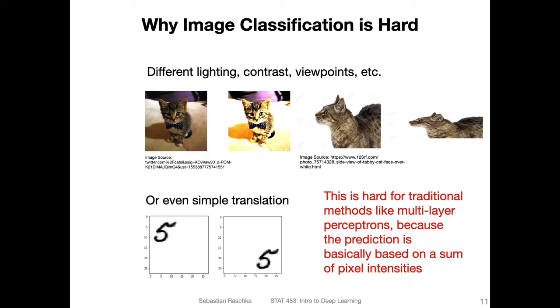For instance, if you take a look at this cat image here, it's the same cat and you as a human probably have an easy time telling that this is the same cat in the same cat picture. But for a computer or for a standard neural network, it's actually a pretty difficult task. So why is that?